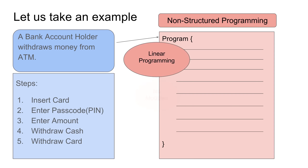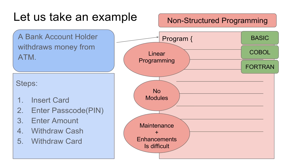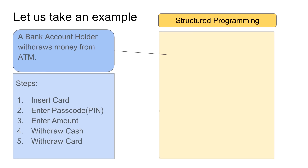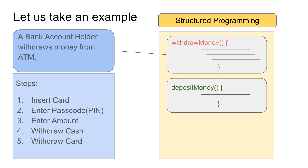This is very linear with no modules, therefore it is very difficult to maintain and enhance the code. BASIC, COBOL, and FORTRAN are languages which use this kind of programming methodology. Now let us see how this example looks in structured programming. As discussed, structured programming will have structures or modules for separate actions. So for withdrawing money, we will have a module called 'withdraw money' and all the code for this particular action will be housed inside that module.